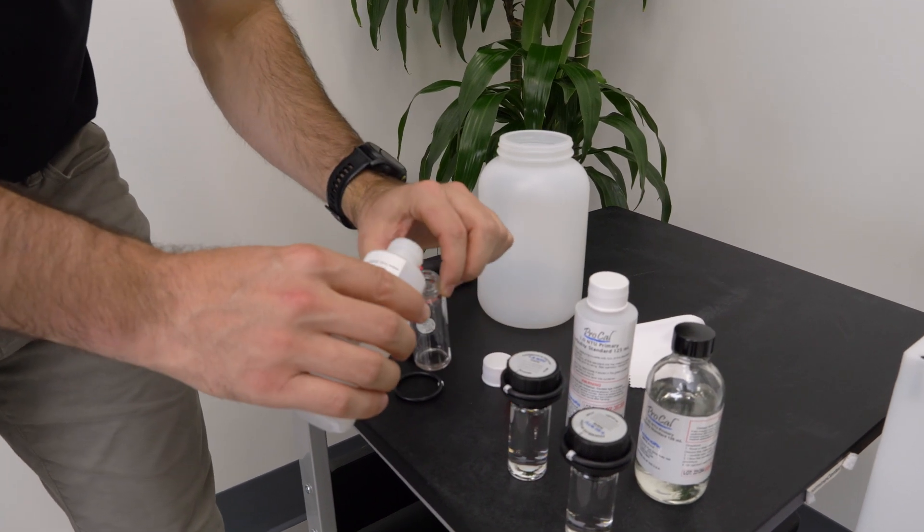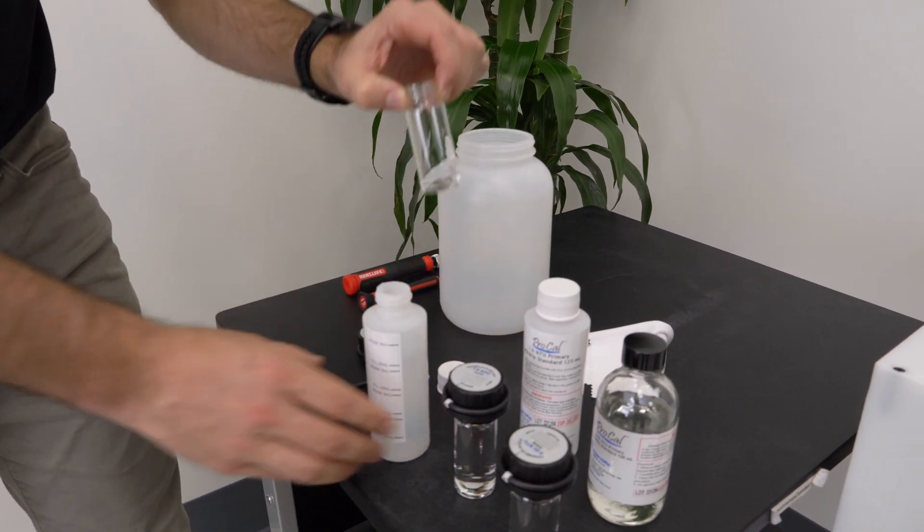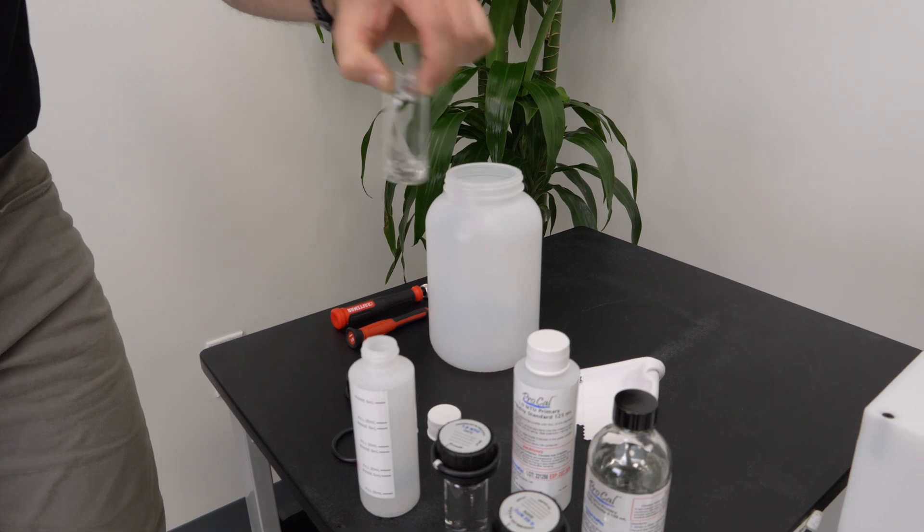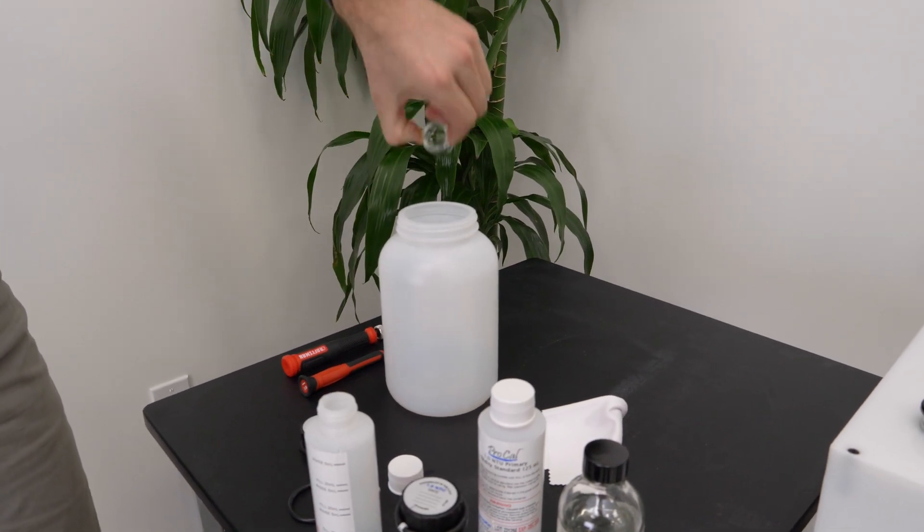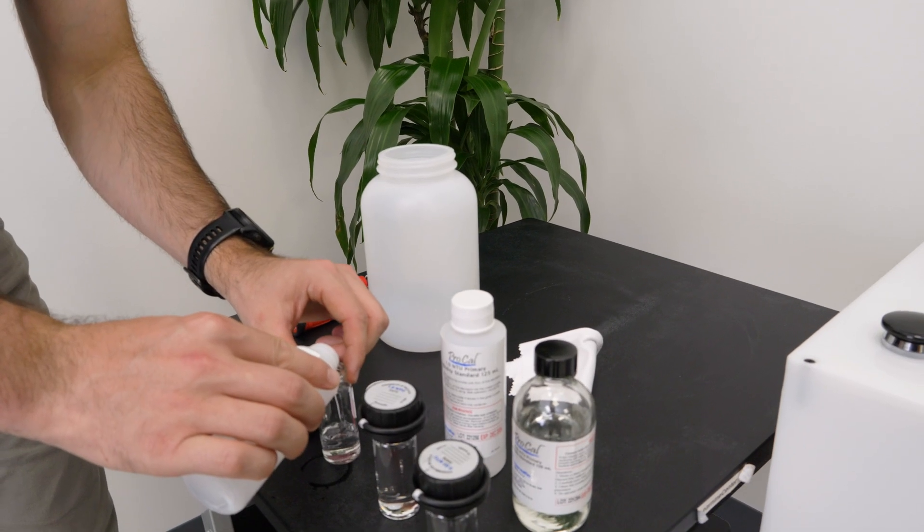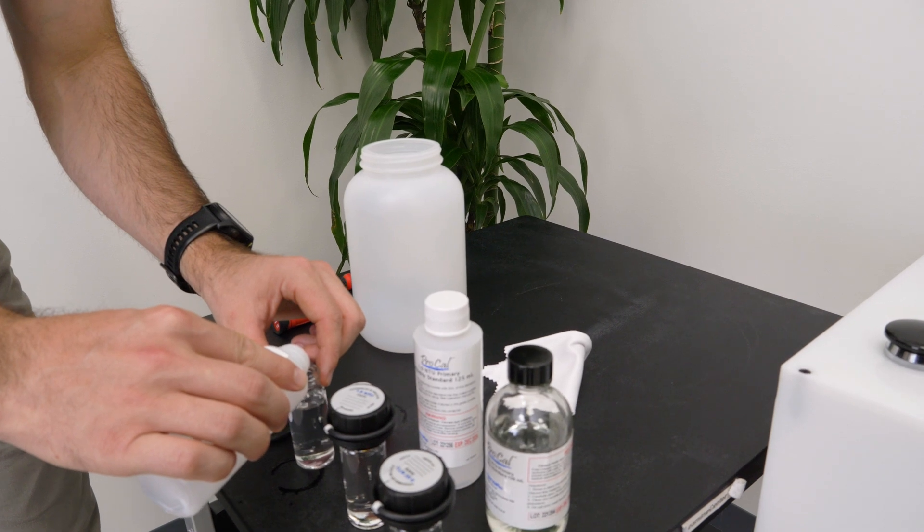First, rinse the cuvette with a few milliliters of the standard solution by swirling the solution inside the cuvette. Then, pour the standard up to the shoulder of the calibration cell and cap it.